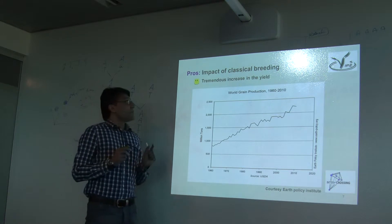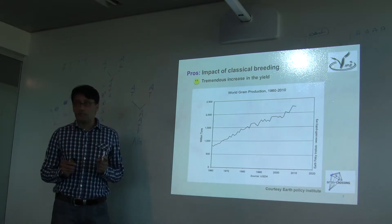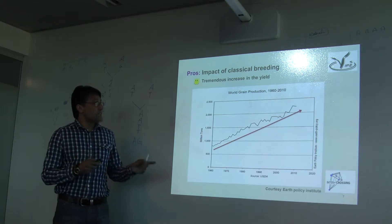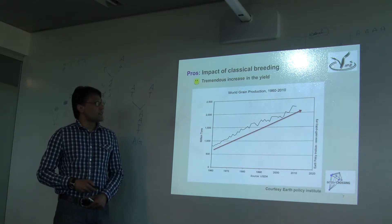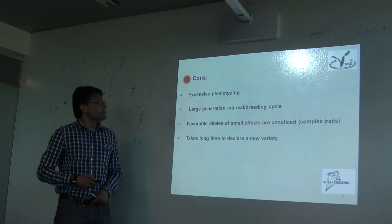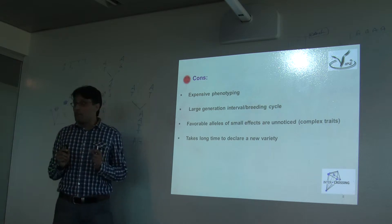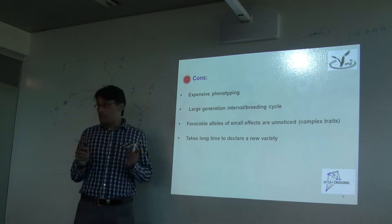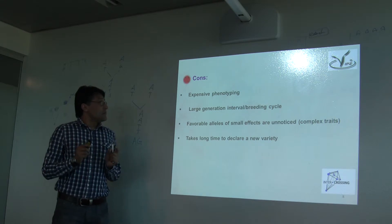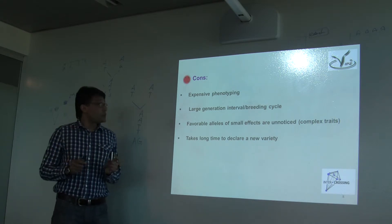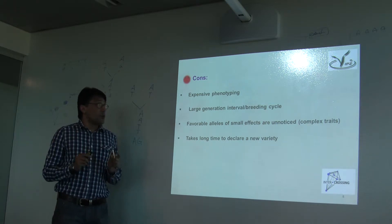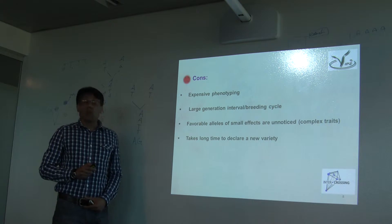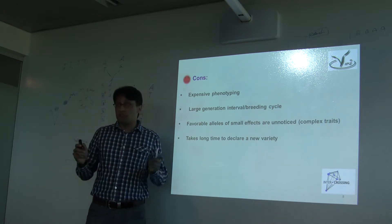The main advantage of classical breeding is the tremendous increase in yield of different crops and grains, with a steady increase in production over the last century or so. But there are some issues: first, expensive phenotyping — you have to do field testing for each cross. There is also a large breeding cycle, so the time factor is involved. Some favorable alleles of small effects are mostly ignored in the case of complex traits, and it takes a long time to declare a variety — almost 15 to 20 years.